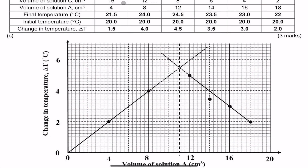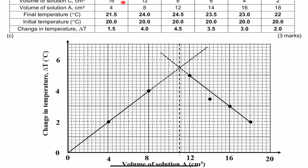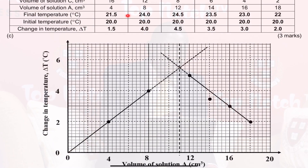Here we can have a graph as captured on screen, where we have the volume of solution C and the volume of solution A. We have two solutions — solution A and solution B — in the concept of neutralization. For example, you may have hydrochloric acid in one beaker, then sodium hydroxide on the burette. For this scenario, you measure 16 mL of solution C, add 4 mL of solution A, get the final temperature, then continue reducing the volume of C and increasing the volume of A, taking the highest temperature each time.